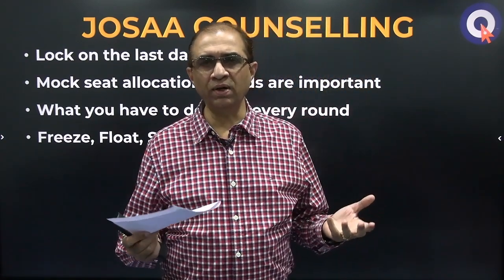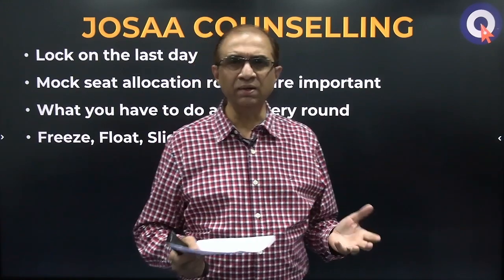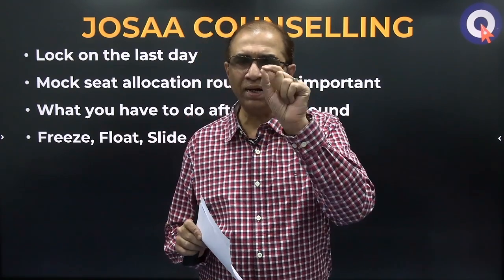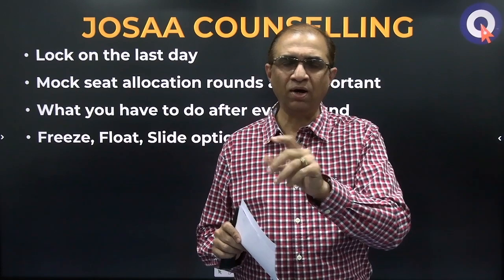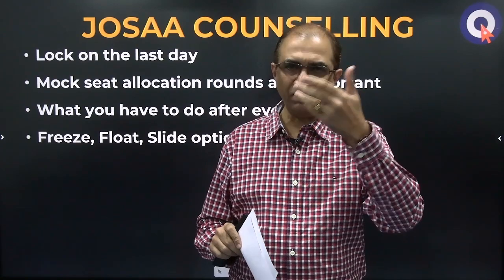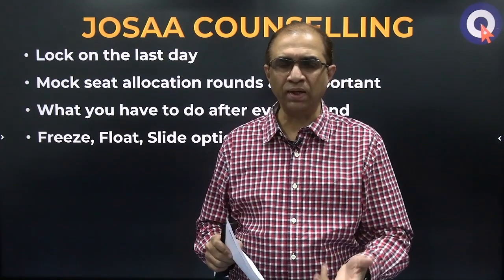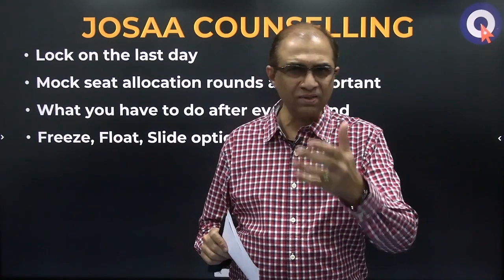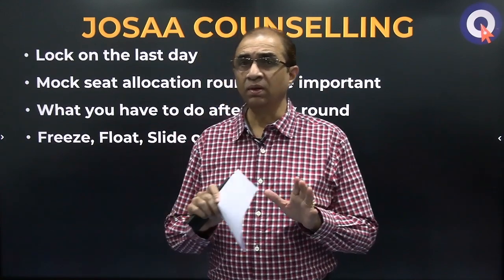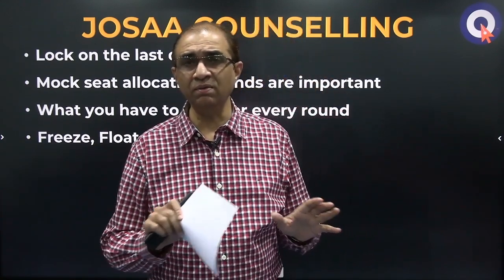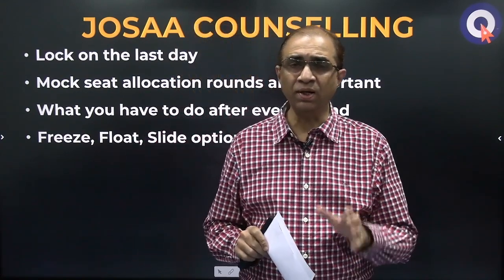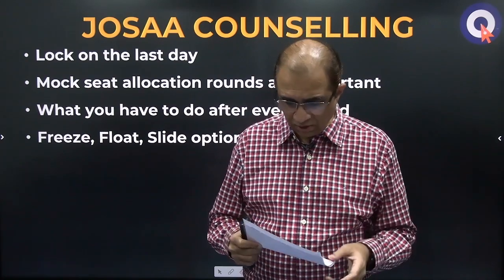Suppose in Round 1 you did not get a seat - if a seat didn't come, in subsequent rounds you will be notified. You don't need to do anything special. On the date of subsequent round seat allocations - for Round 2, Round 3, or Round 4 - check the portal on that day. See what came, whether any choices came, whether your preferred option came - check it. The email will also show what was allocated. If it came, the same process will continue. In subsequent rounds, you can only change your options once - there is no scope to change them again. So be careful - all options must be given on the 21st; after that there is no scope to change.